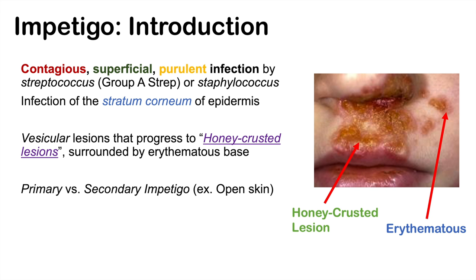You can get Impetigo either by a primary infection — so it's the first infection you get in that area — or it can be a secondary Impetigo. That's an Impetigo infection secondary to, say, a skin cut or a wound. You can have open skin that gets seeded with Streptococcus or Staphylococcus bacteria, causing a secondary Impetigo.